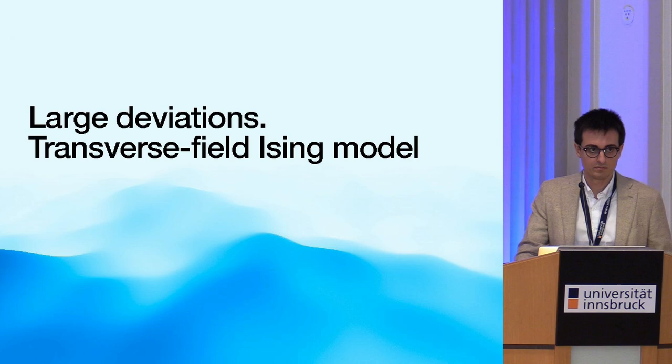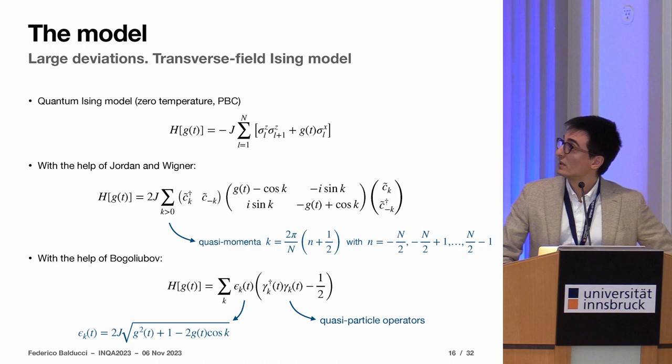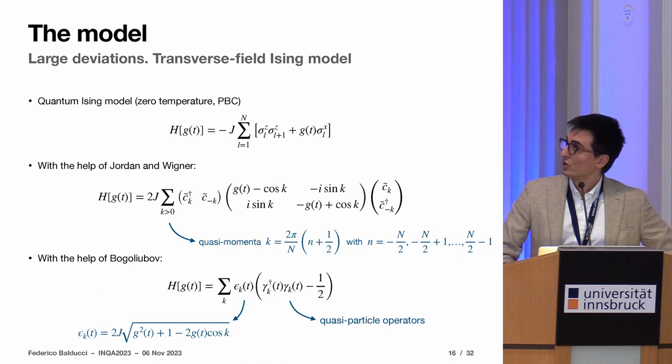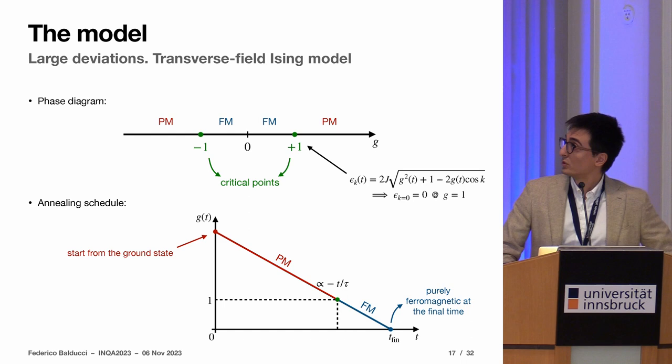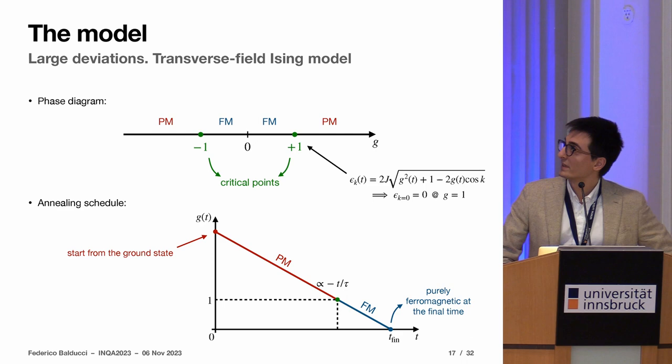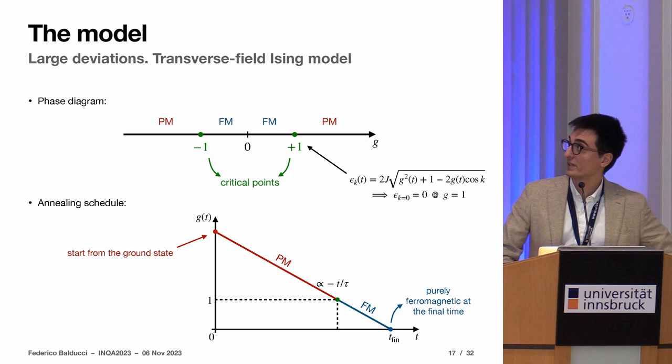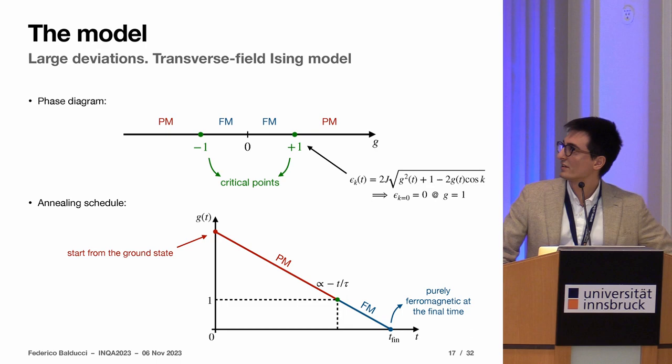Let me now specify to the case at hand, which is the transverse field Ising model, but other models can be studied as well. This is the Hamiltonian I will be interested in. It's a ferromagnet or paramagnet depending on the relative strength of the transverse and Ising interactions. This model can be diagonalized by Jordan-Wigner and then Bogoliubov transformations. You see here that it will decouple completely all the momenta into separate modes with this dispersion here. From this dispersion one can understand what is the phase diagram of the model. At large transverse field G the model is a paramagnet, then you have a phase transition in the universality class of the two-dimensional classical Ising model.